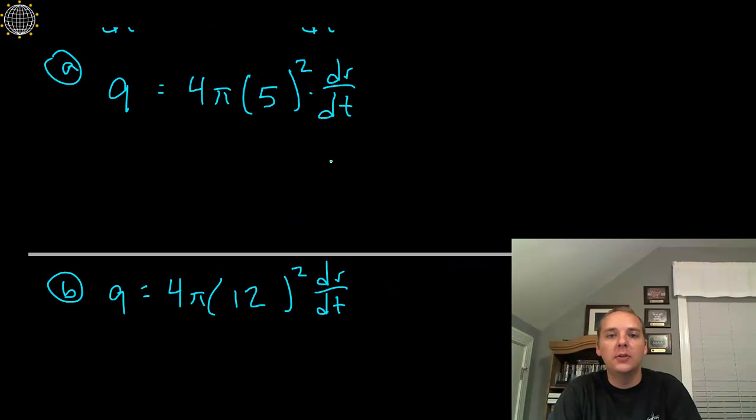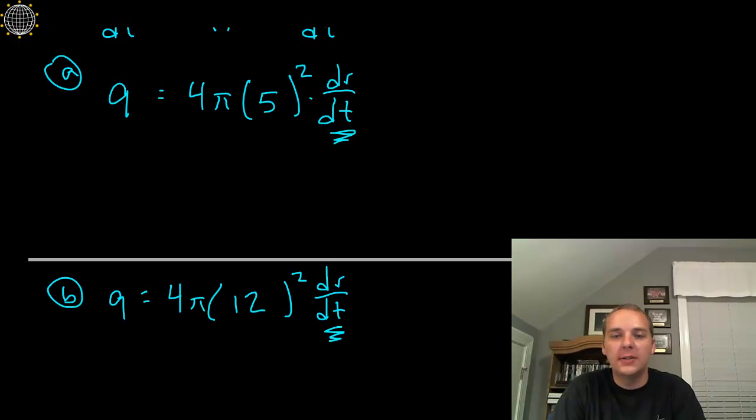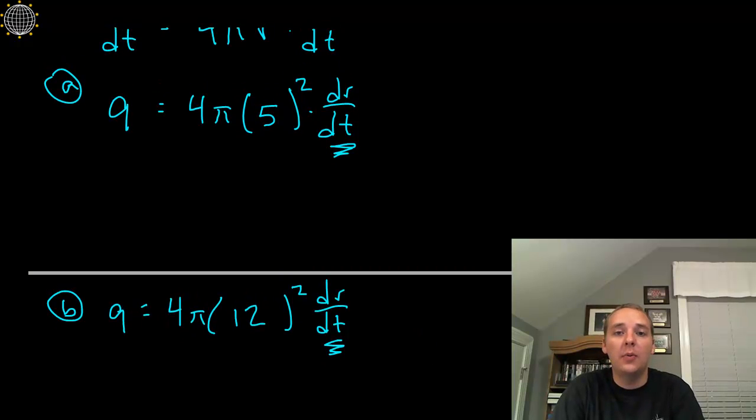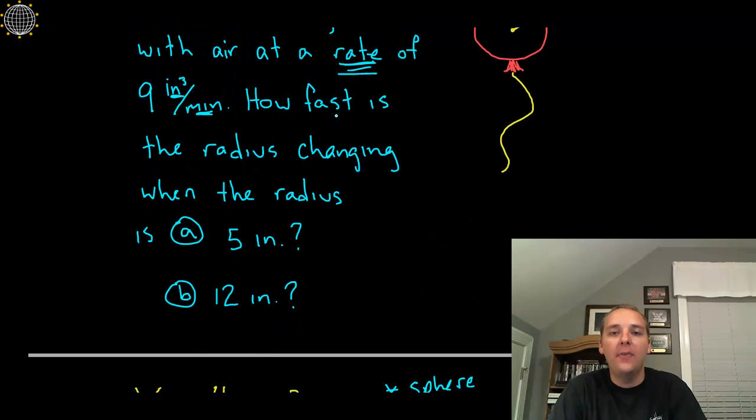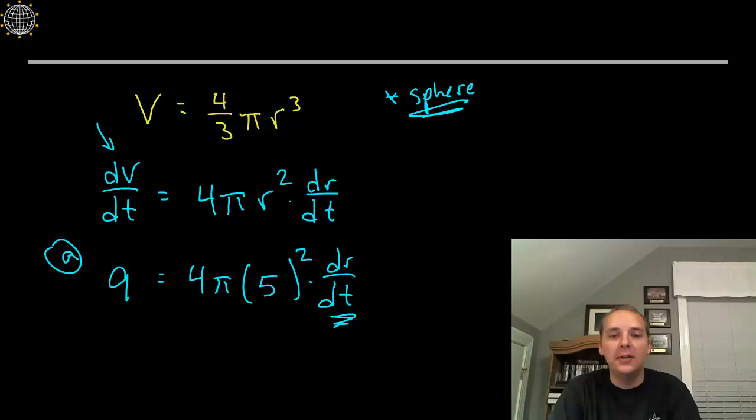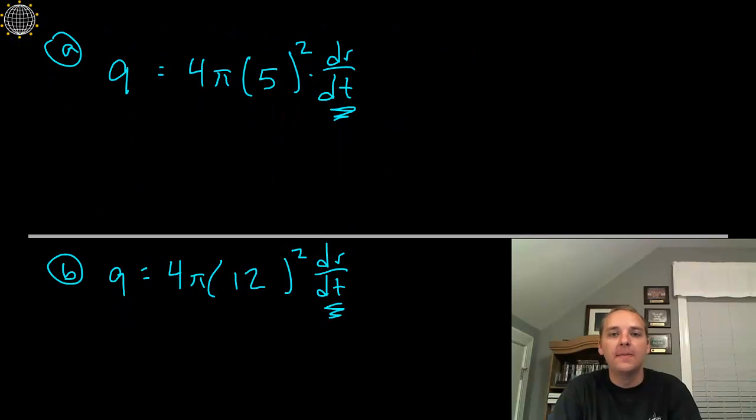And then in both of these, we're going to solve for the missing quantity, namely dr dt. Let's think about why we're looking for that. Well what did they ask us? They said how fast, hint hint, that's a key word for rate, how fast is the radius changing? So change in radius over change in time, yeah that sounds like dr dt.